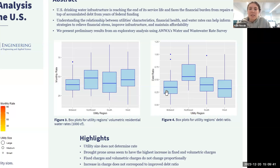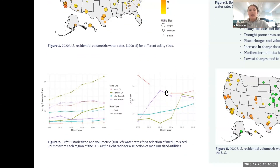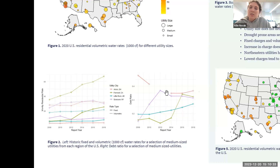A potential reason behind the Northeast's higher debt ratio is probably because the Northeast has the oldest infrastructure in the U.S., so they've probably had to do a lot more repairs and accumulated more debt over time. For the historic data, I selected medium-sized utilities from each general region of the U.S. and looked at volumetric charge — the consumption-based charge — as well as the fixed charge, which is the rate that everybody pays regardless of their water use, and I also looked at debt ratio.